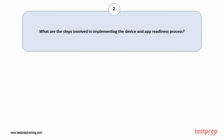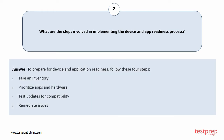Question number 2: What are the steps involved in implementing the device and app readiness process? To prepare for device and application readiness, follow these four steps: 1. Take an inventory. 2. Prioritize apps and hardware. 3. Test updates for compatibility. 4. Remediate issues.